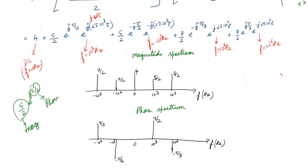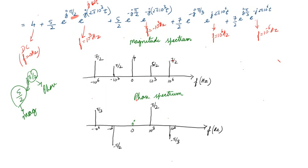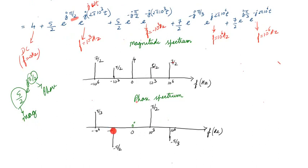What about the phase spectrum? The DC component doesn't have any phase angle — at 0 Hz the phase angle is 0 radians. The phase angle corresponding to frequency 10³ Hz is π/2. The phase angle corresponding to frequency −10³ Hz is −π/2. You can see here at frequency −10³ Hz I have marked the phase angle as −π/2.